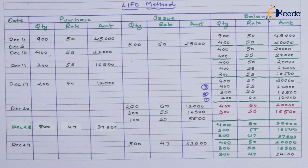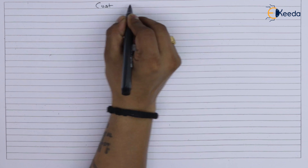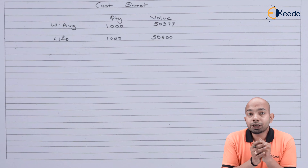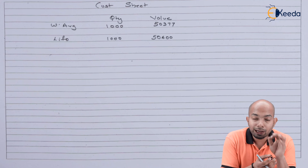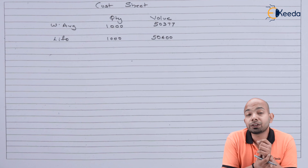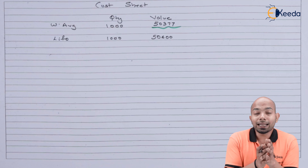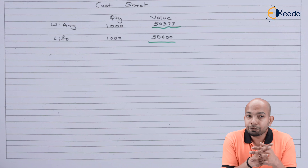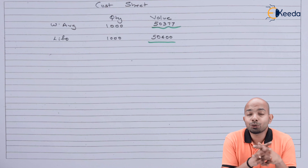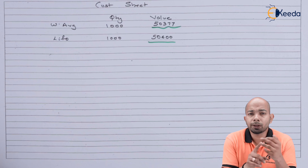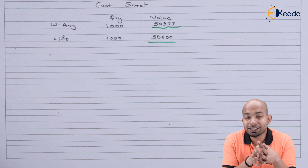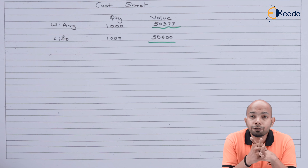The closing stock has been determined and mentioned in the last column. The cost comparison shows that the value of closing stock as per the weighted average method comes to 50,377, and as per the LIFO method it comes to 50,600. This is the basic difference when comparing these inventory valuation methods.